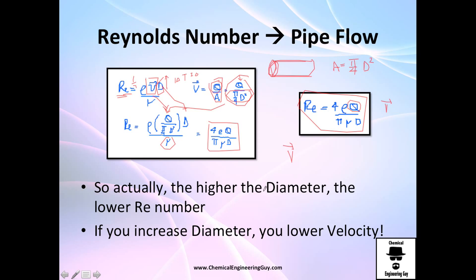So by definition, in a pipe with constant diameter, if you increase the diameter, you will lower the velocity, which will lower the Reynolds number.